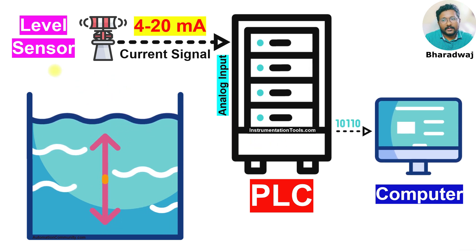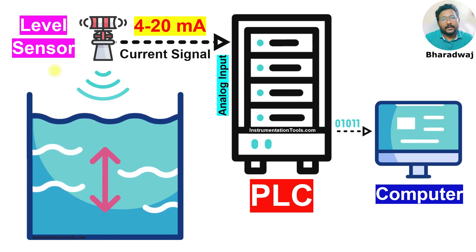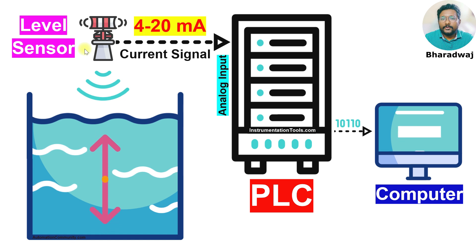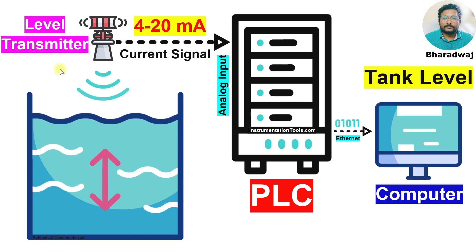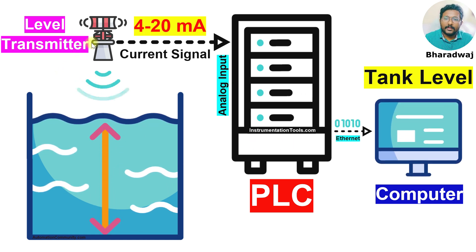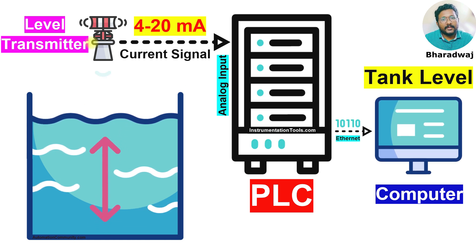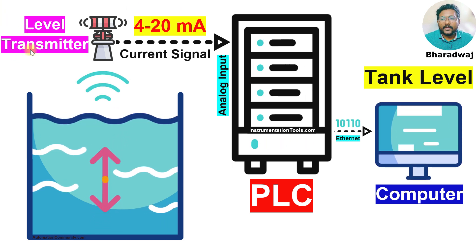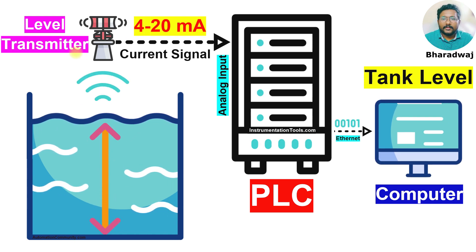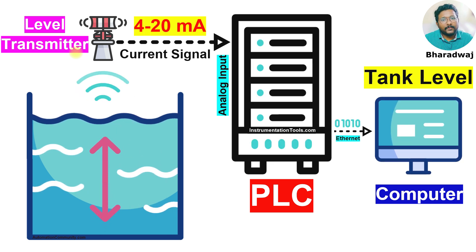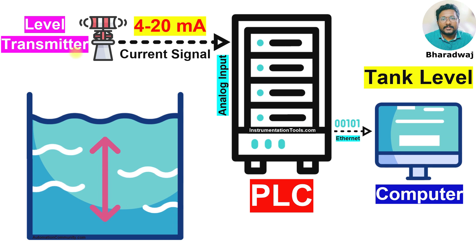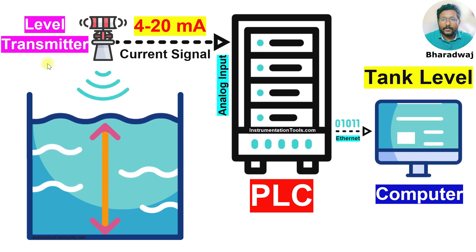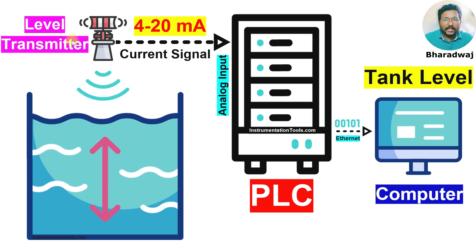In general terminology, we use sensor — like level sensor, pressure sensor, temperature sensor, etc. But in industries, we use level transmitter. The transmitter mostly sends the signal in the form of 4 to 20 mA. That is why we use the word transmitter instead of sensor. A sensor can send the signal in any form, but in industries the standard signal is 4 to 20 mA. For that purpose, the terminology we adopted is level transmitter.